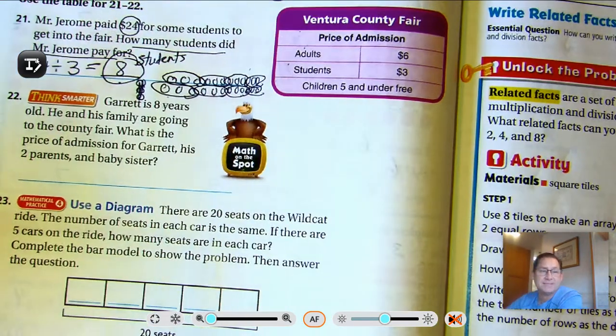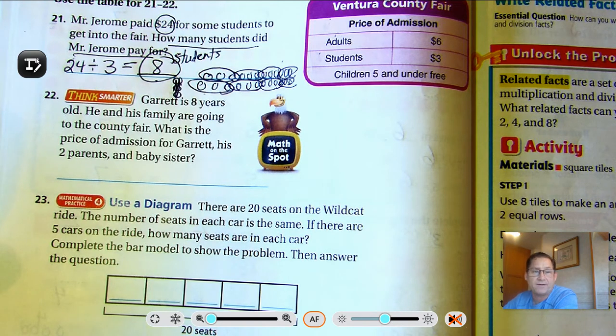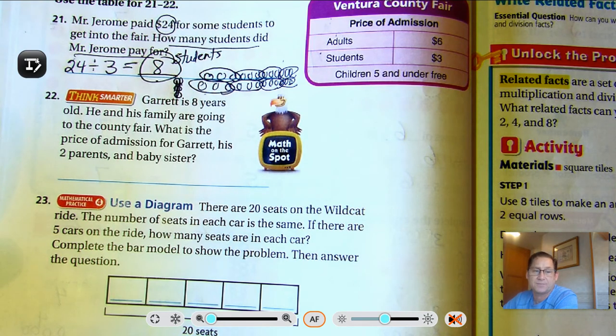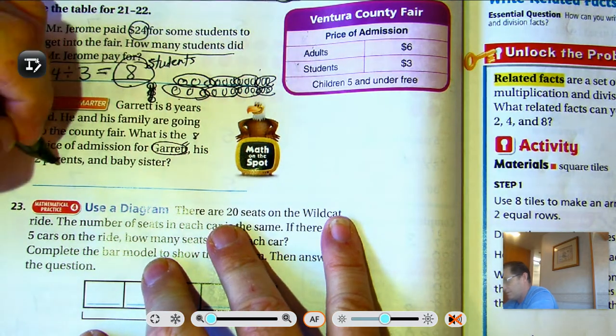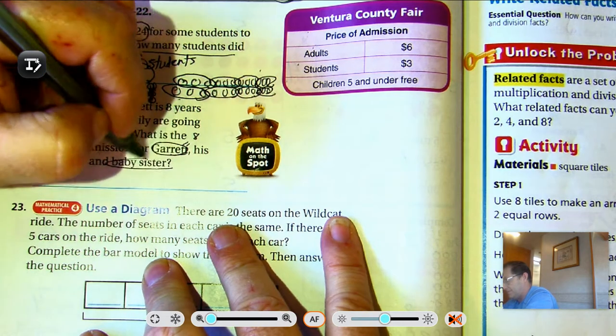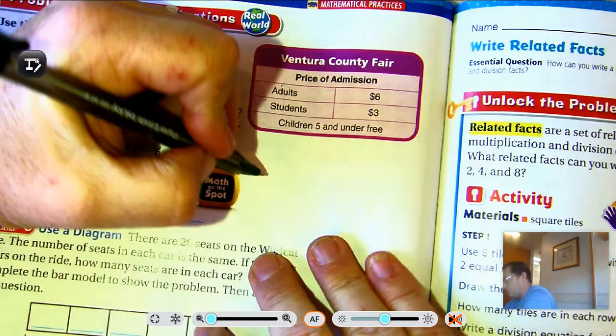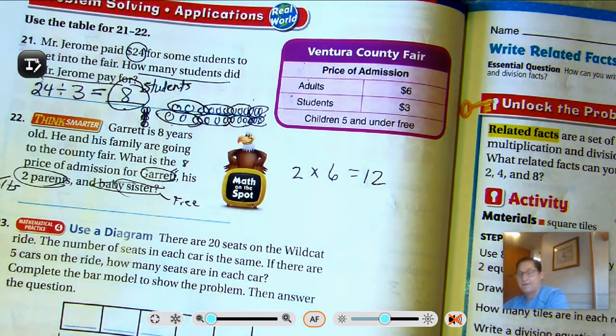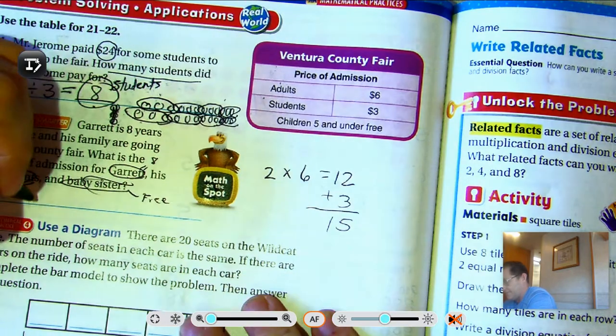So Garrett is 8 years old. He and his family are going to the county fair. What is the price of admission for Garrett, his two parents, and baby sister? So Garrett, 8 years old, two parents are adults, and baby sister is free. So 2 parents times 6 is $12. Garrett is $3. So $15 total.